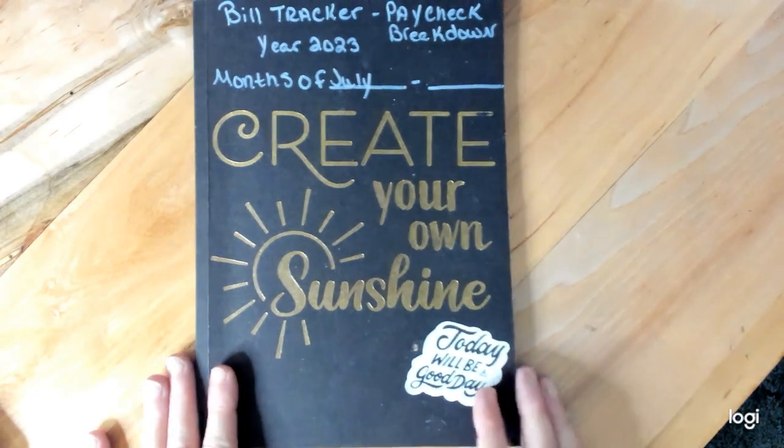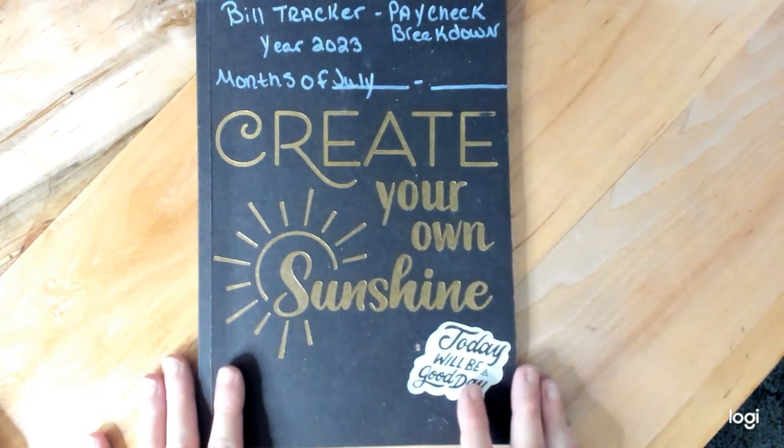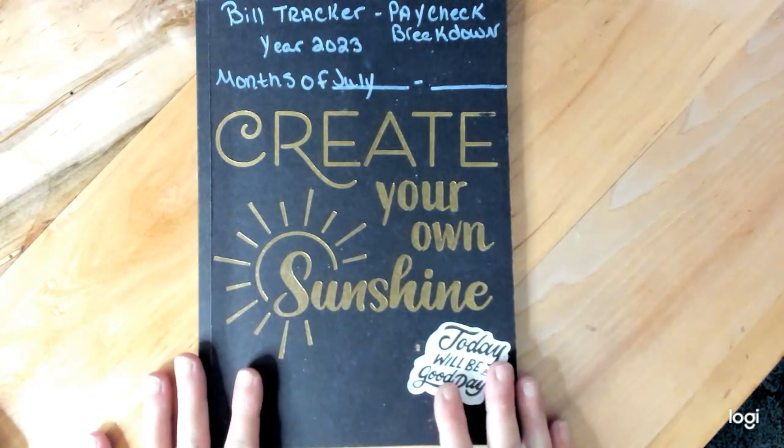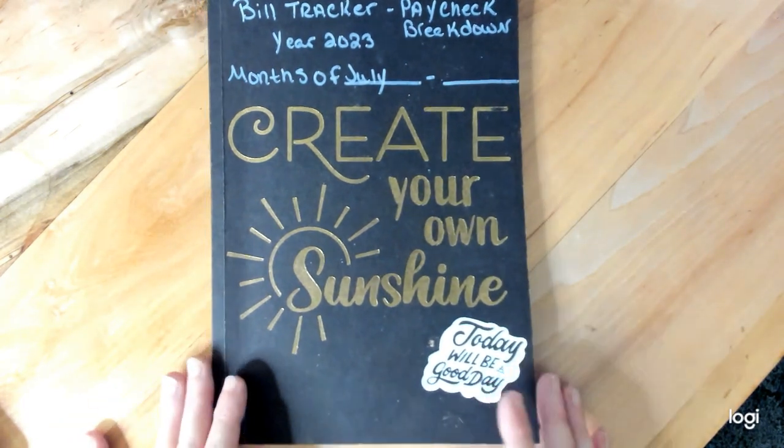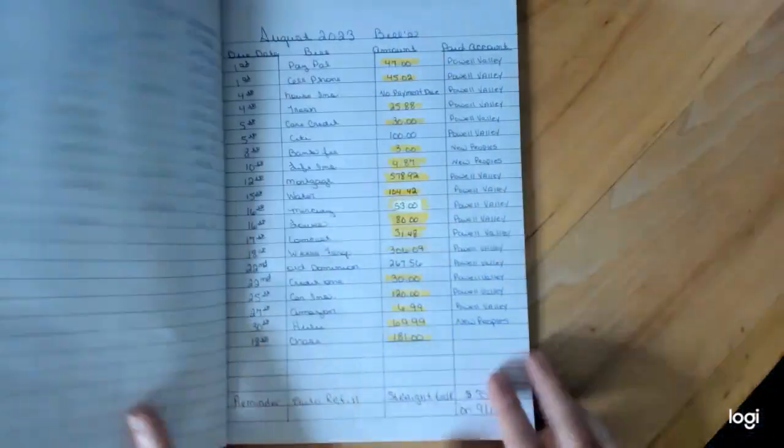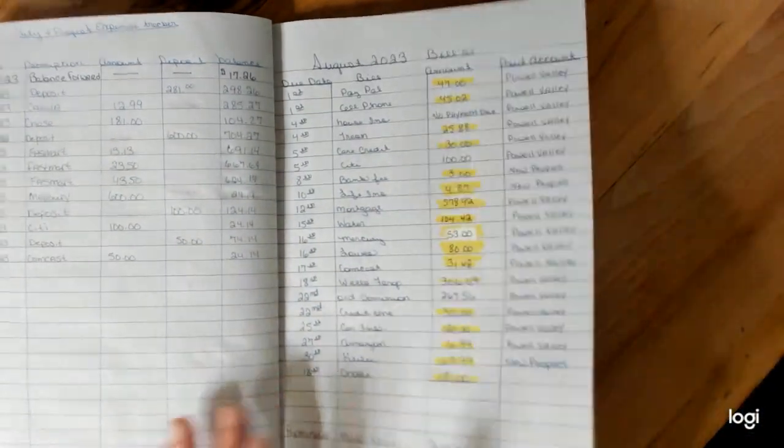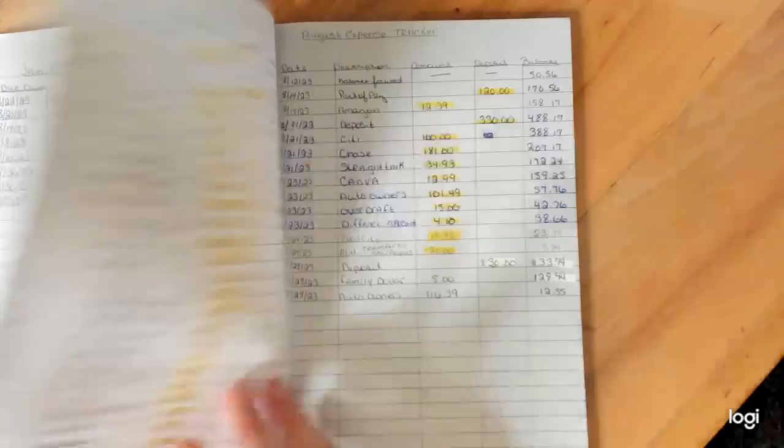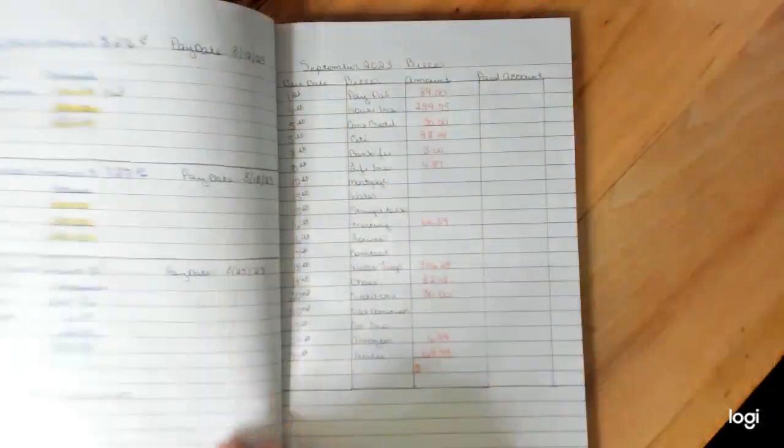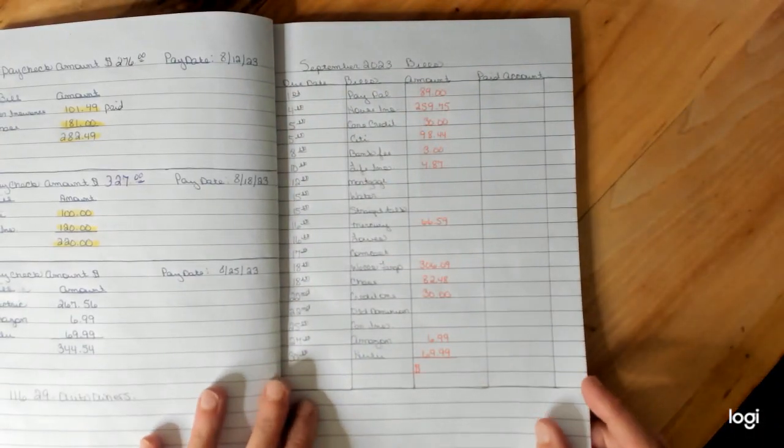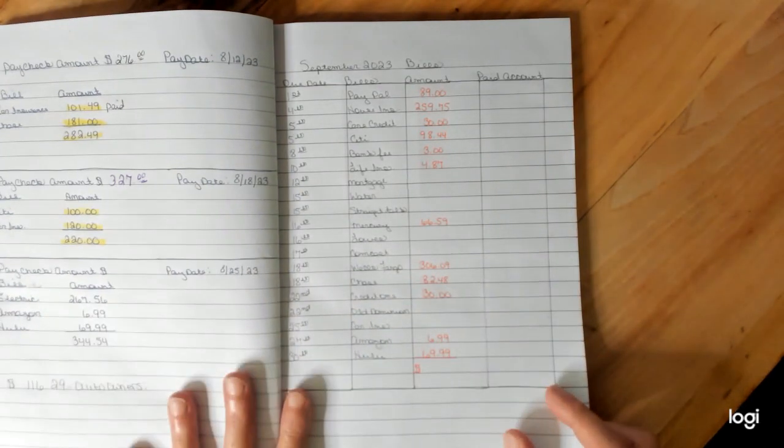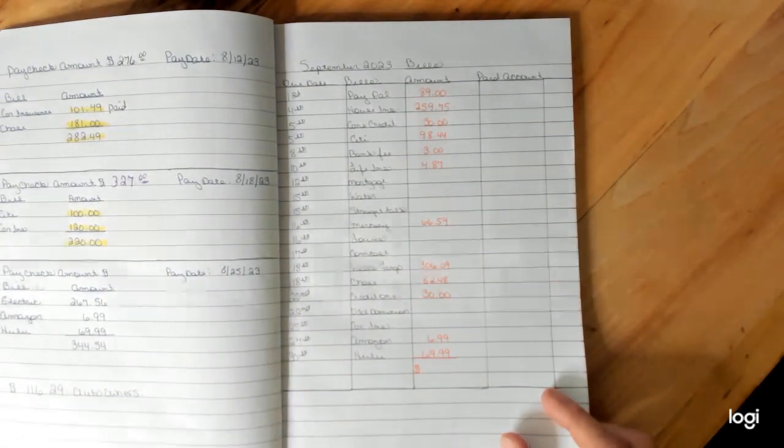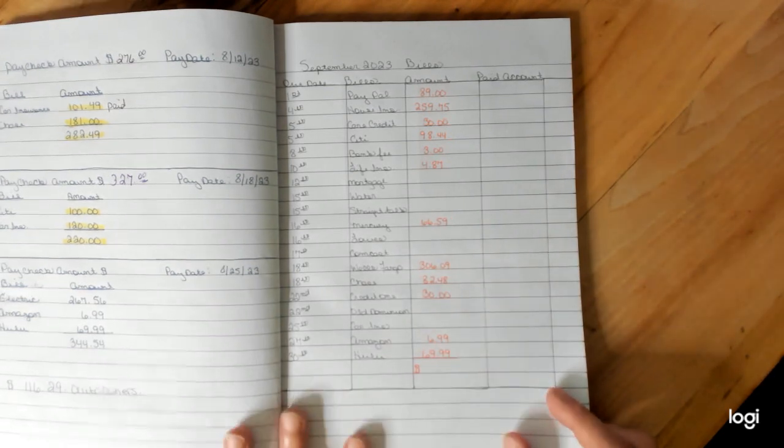So today it is August the 31st. Can you believe tomorrow is September? This is crazy. So last night I couldn't sleep and I was thinking about September and what challenge could I do in September besides my coin savings workbook that I got from Amanda's budget.